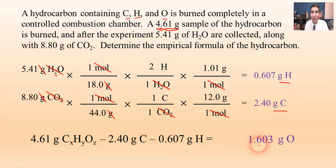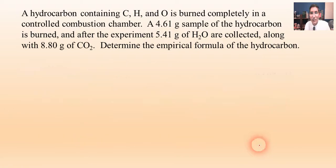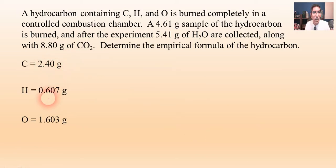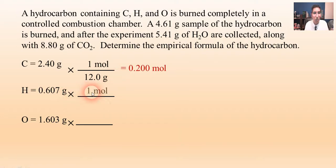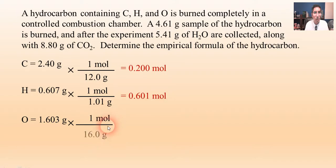Now we take these values and use them to determine the empirical formula, just as we did in the previous video. We have 2.40 grams of C, 0.607 grams of H, and 1.603 grams of O. The first step is to convert all three to moles. For carbon: divide by 12 g/mol to get 0.200 moles. For hydrogen: divide by 1.01 g/mol to get 0.601 moles. For oxygen: divide by 16.0 g/mol to get 0.100 moles.